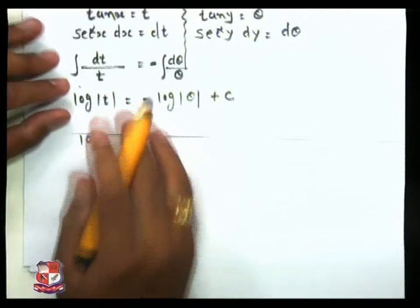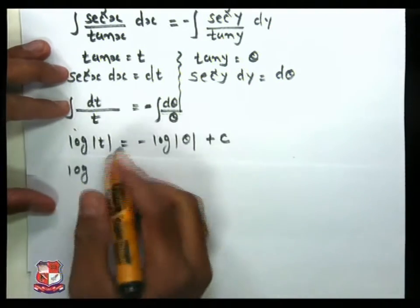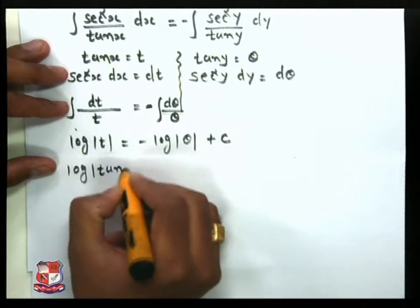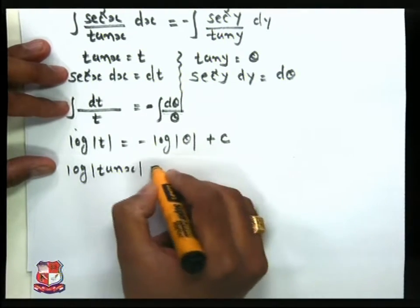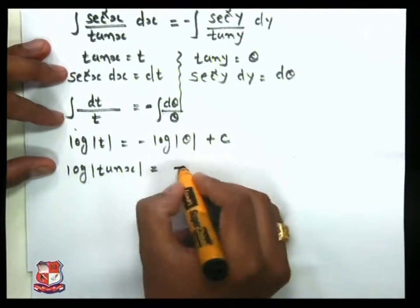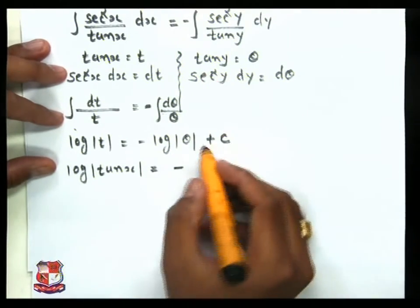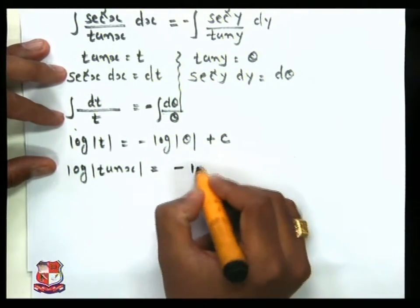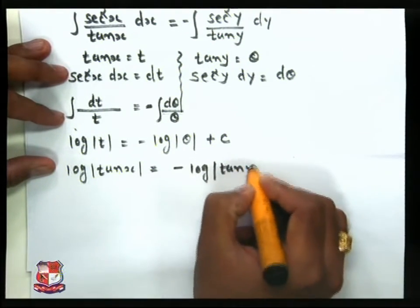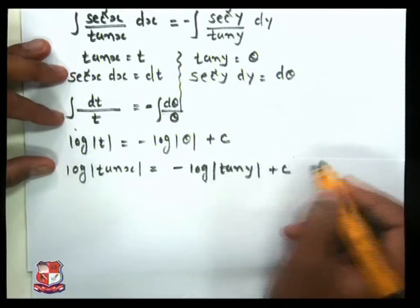Now we replace our assumed values back with the original values in terms of x and y. So t is replaced by tan(x) and θ is replaced by tan(y). Our equation becomes: log|tan(x)| = −log|tan(y)| + c.